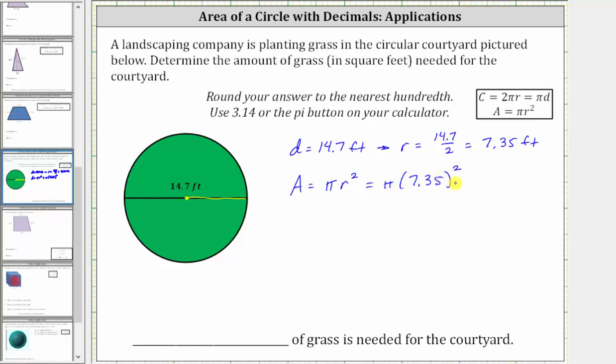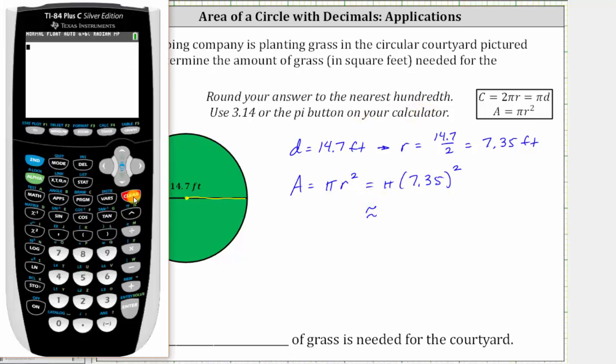And now we'll go to the calculator, and we are told to round to the hundredths place value, or two decimal places. To enter pi, we press second, and then the exponent key. Notice the pi above this key, and then we enter 7.35 squared.